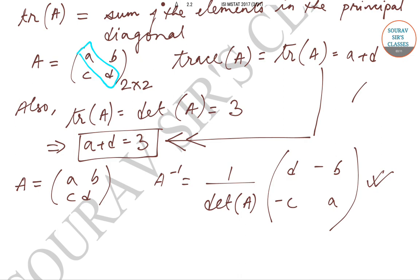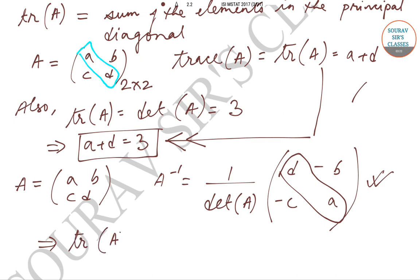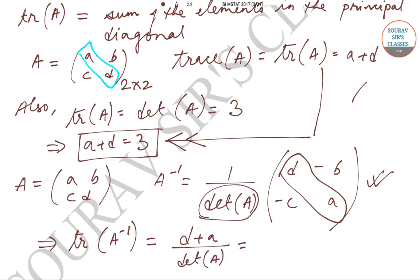In this matrix, the trace is given by d + a, and the determinant of A is outside, so when we find the trace of A inverse it will be (d + a) / det(A) = 3 / 3 = 1. So the correct answer is option C.